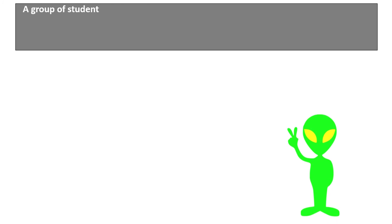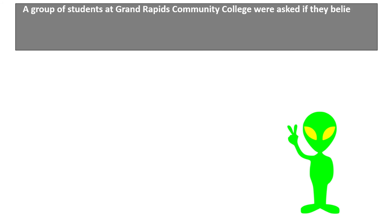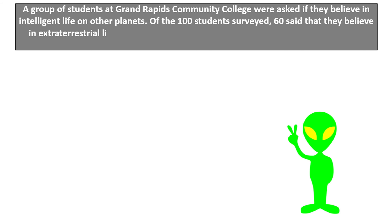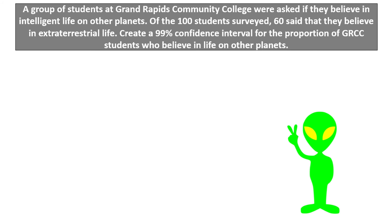Let's look at an example. A group of students at Grand Rapids Community College were asked if they believe in intelligent life on other planets. Of the 100 students surveyed, 60 stated that they believe in extraterrestrial life. Create a 99% confidence interval for the proportion of GRCC students who believe in life on other planets. Now the first thing to do is to write out some of the information. 100 students were surveyed, so the sample size n is 100. The 60 that believe in extraterrestrial life is x, the number of successes. The sample proportion, p-hat, is just x divided by n and is equal to 60 divided by 100, or 0.6. The confidence level is 99%.